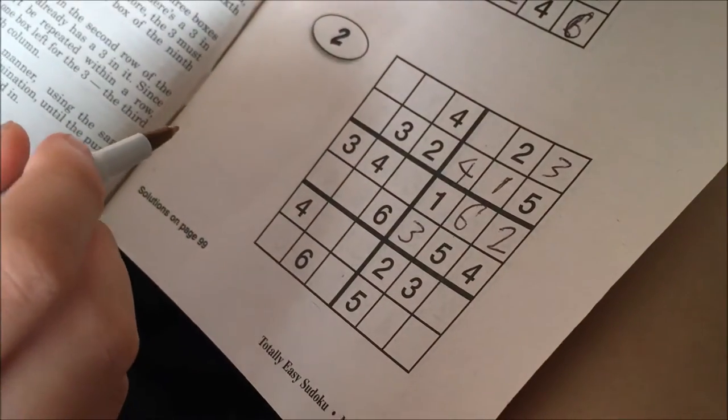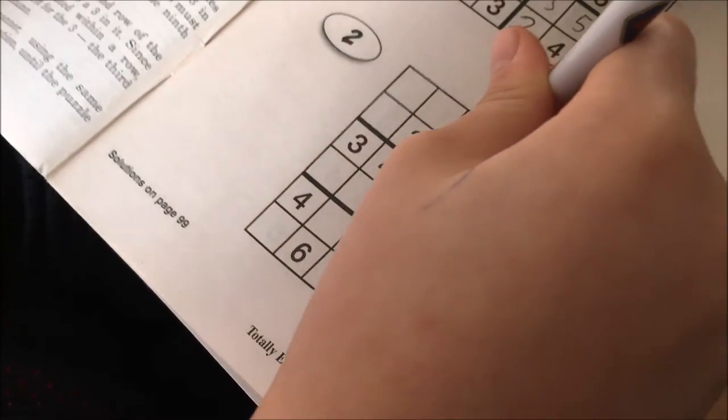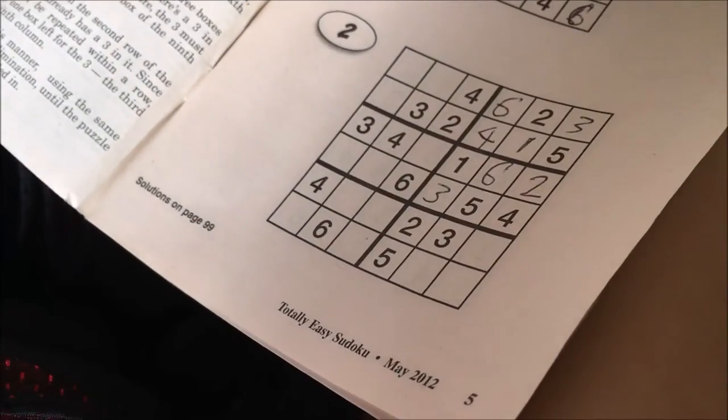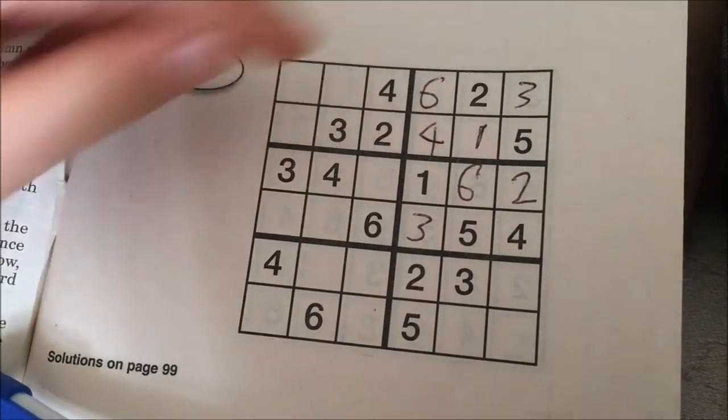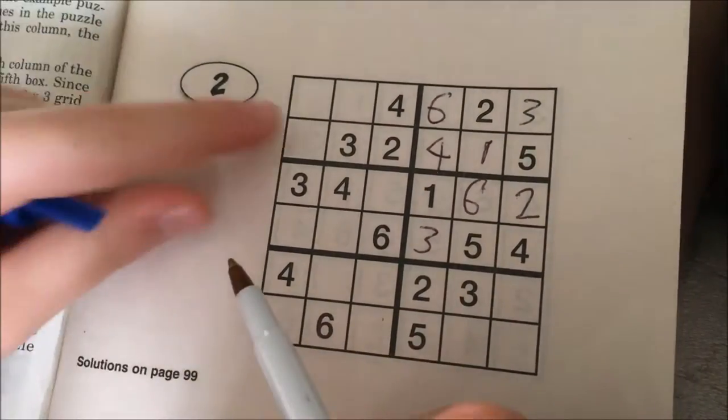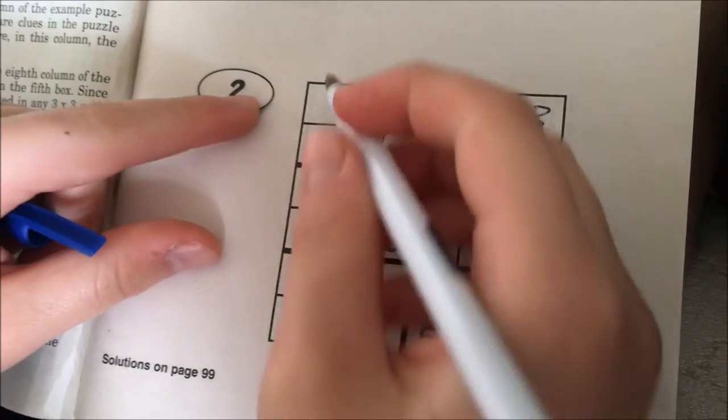And the missing one is number six. Six can't go anywhere here because there's already six right there. So six has to go in this square right here next to the three.